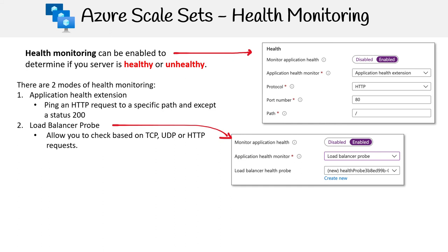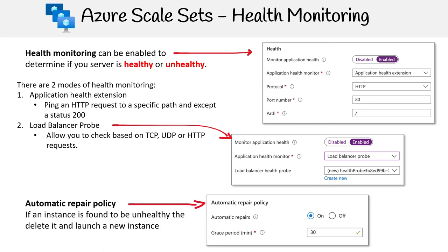Now, if you want to replace unhealthy instances, there is an automatic repair policy. It's not turned on by default, so you have to explicitly enable it. What it will do is if it finds an instance that is unhealthy, it's just going to terminate it and then launch a new instance.